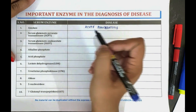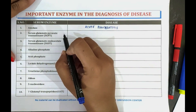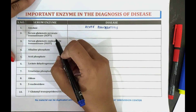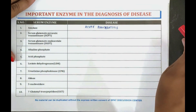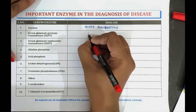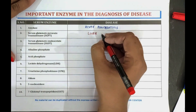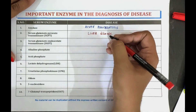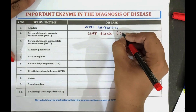Now coming towards the next one, which is serum glutamate pyruvate transaminase, that is SGPT. The SGPT enzyme is used to diagnose the liver disease, that is hepatitis.